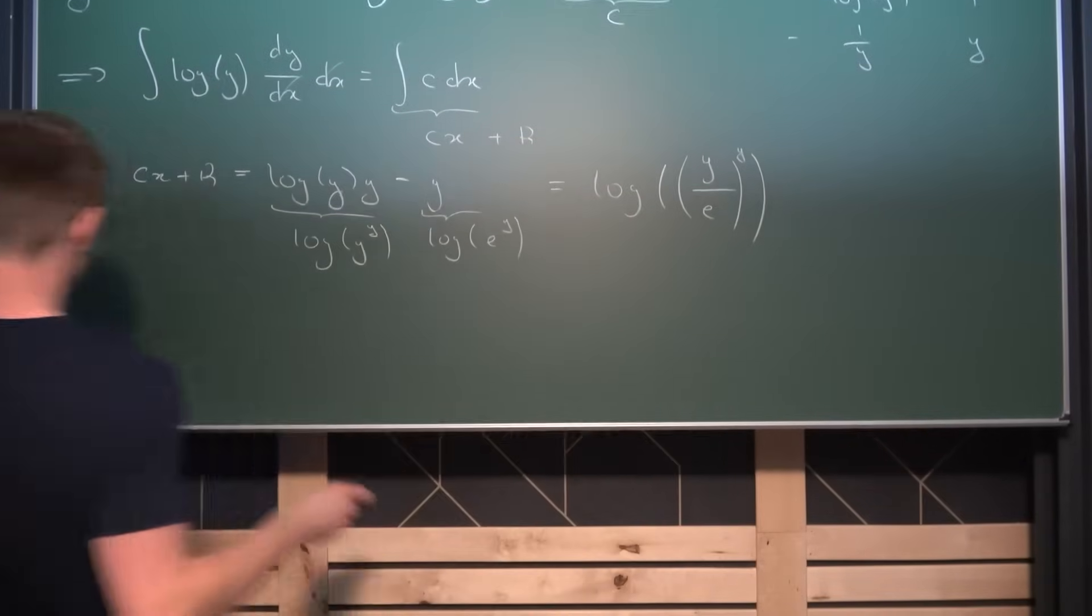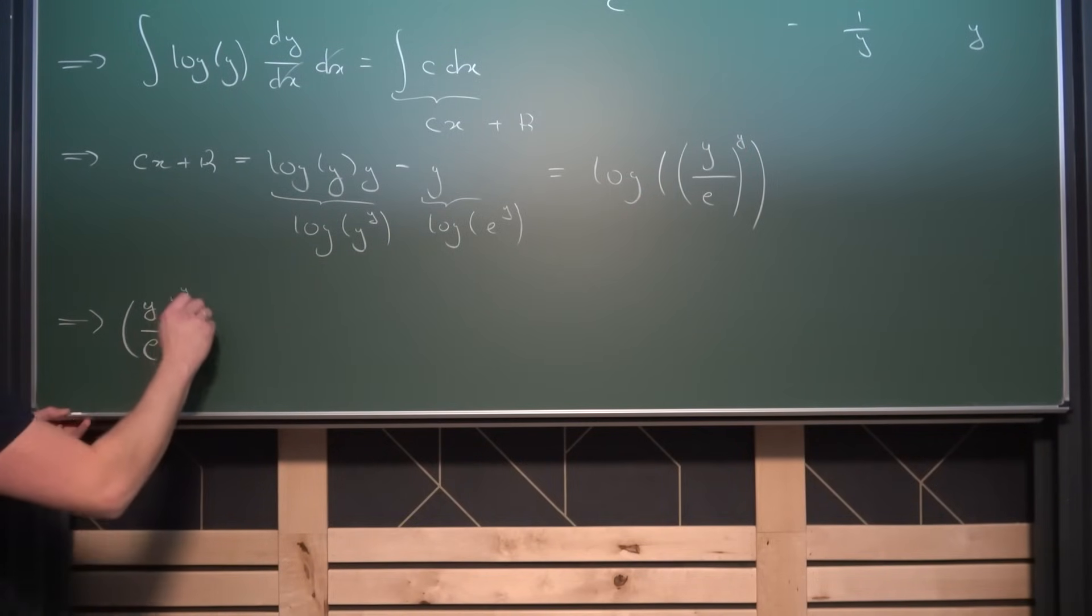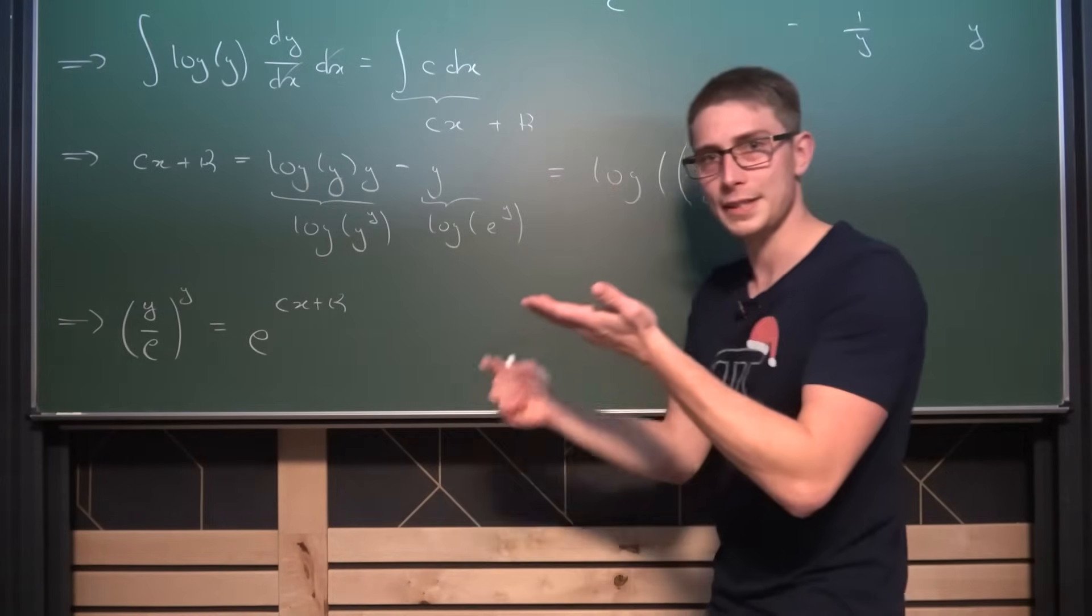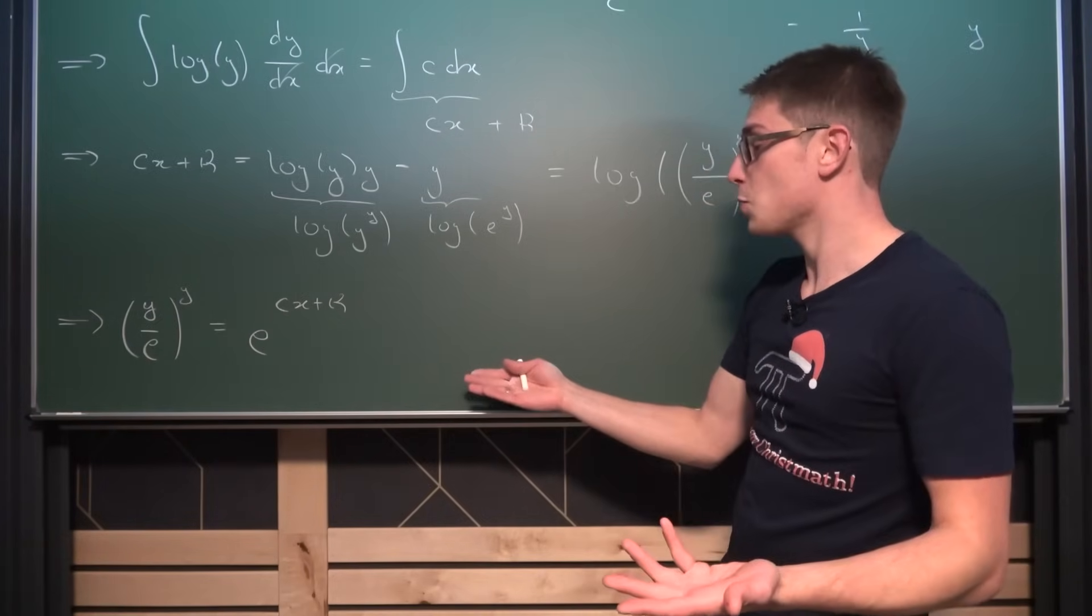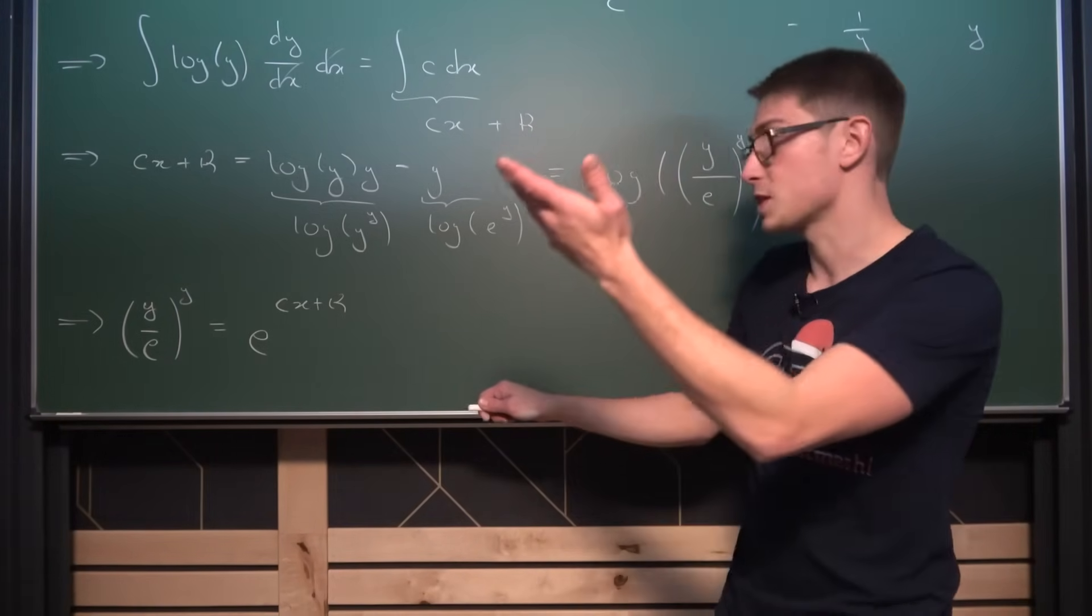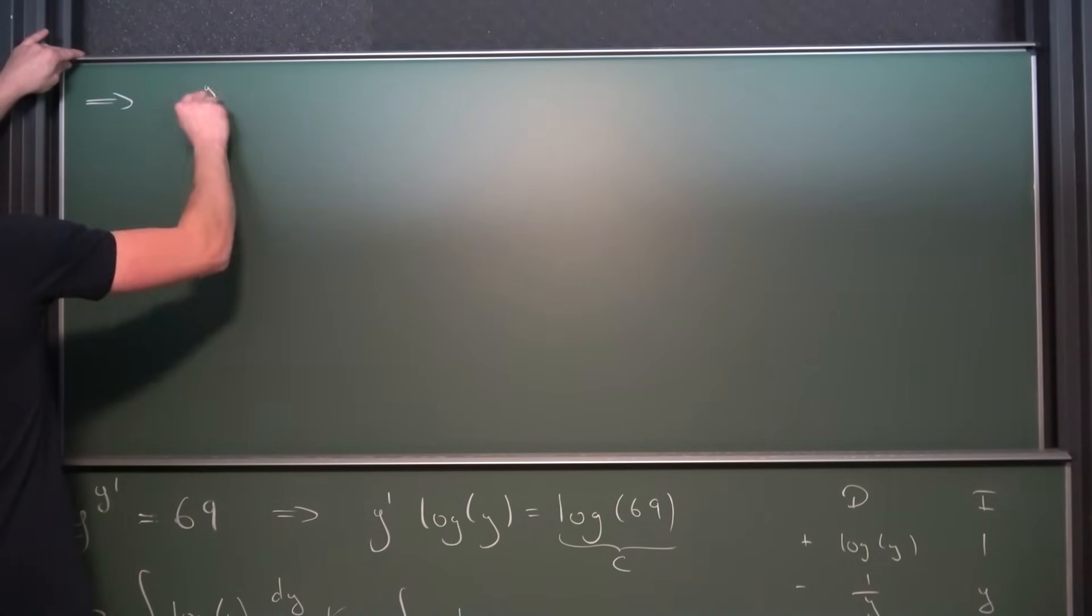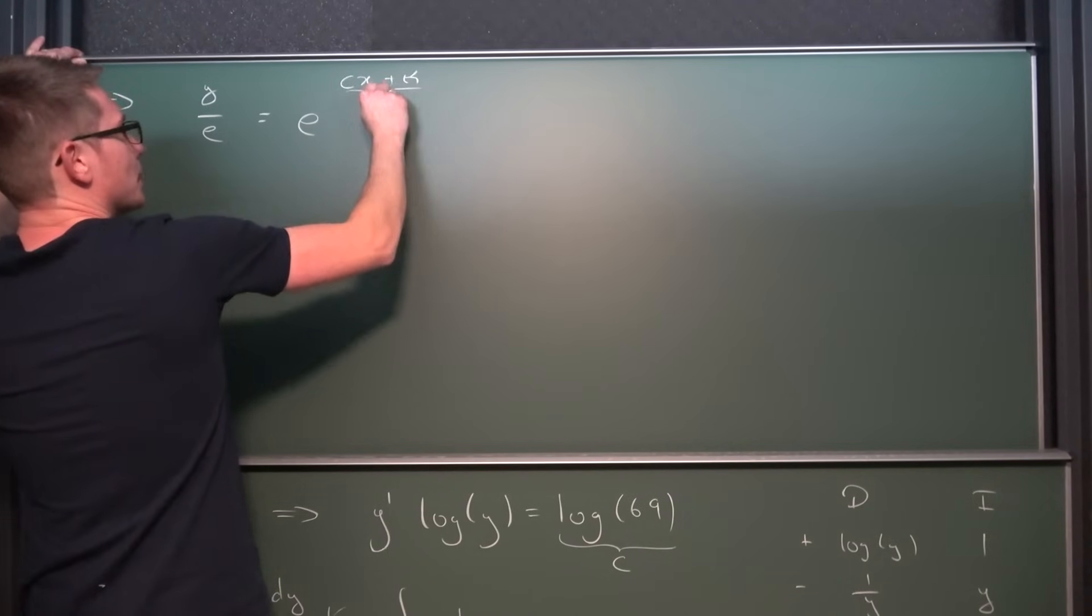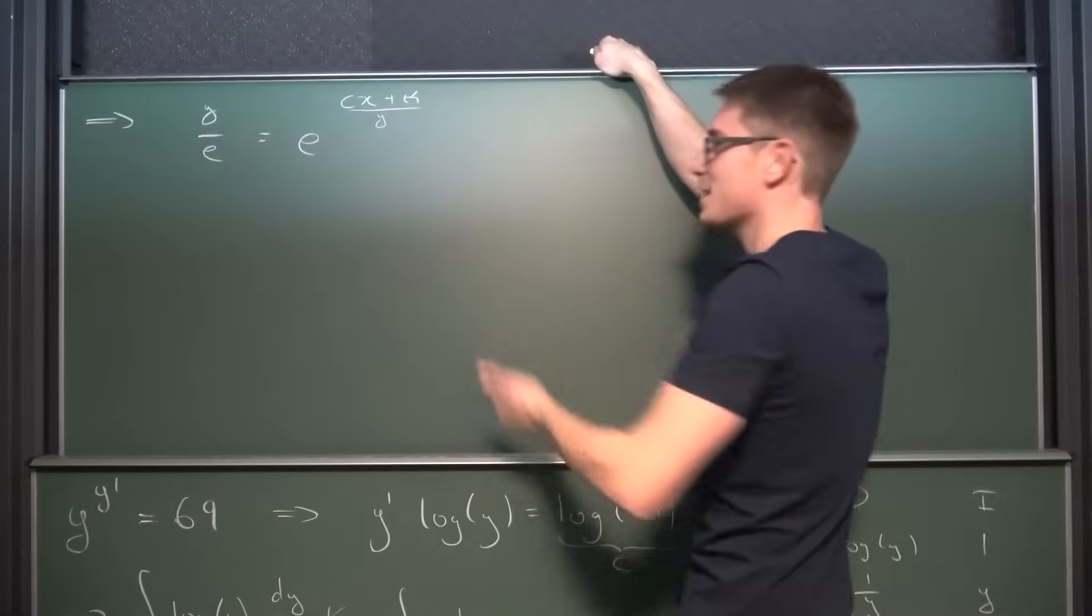So we are gonna exponentiate both sides and we are going to end up with y divided by e to the y through power is equal to e to the c times x plus arbitrary constant kappa. That is a bit better but we still have y to the y here in some kind of way. So let us get rid of the y power that we got here so we can take the y root on both sides. This is something we can do or exponentiate both sides by 1 over y giving us that y divided by e is equal to e to the c times x plus kappa divided by y. But this is still not nice yet because now we have a y here and a y in the exponent here.